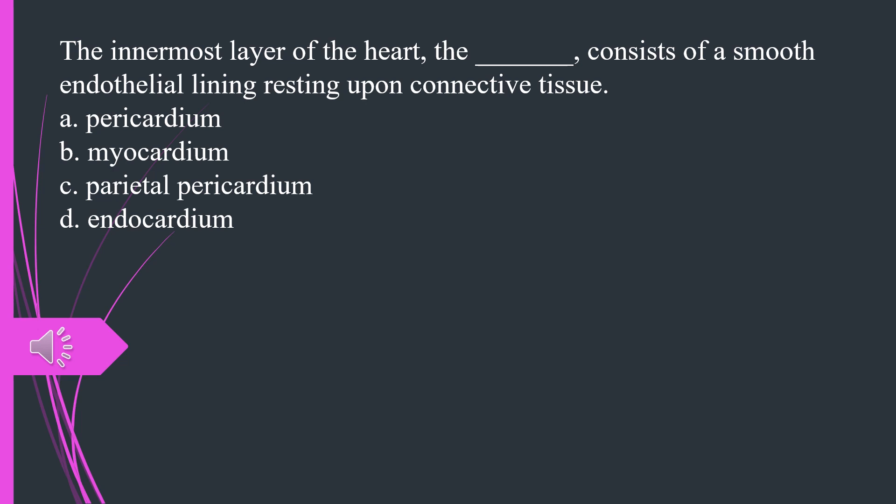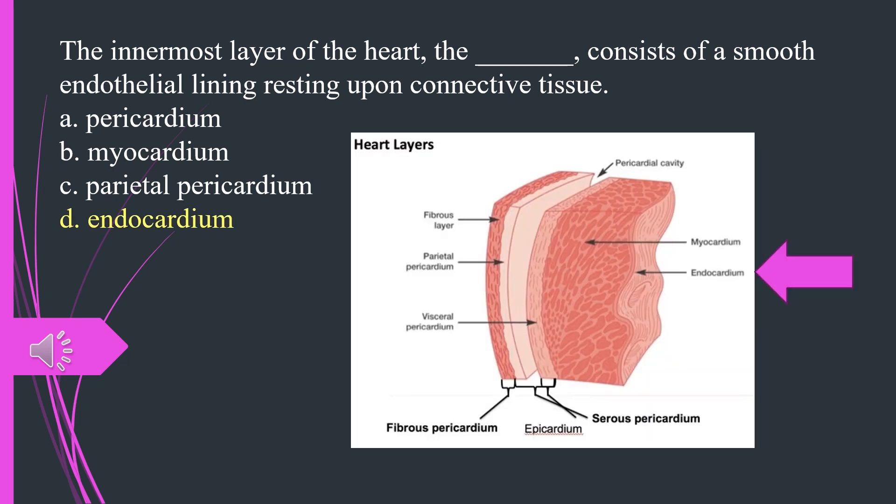The innermost layer of the heart, the what, consists of a smooth endothelial lining resting upon connective tissue. A. Pericardium B. Myocardium C. Parietal pericardium D. Endocardium. The answer is D, endocardium.